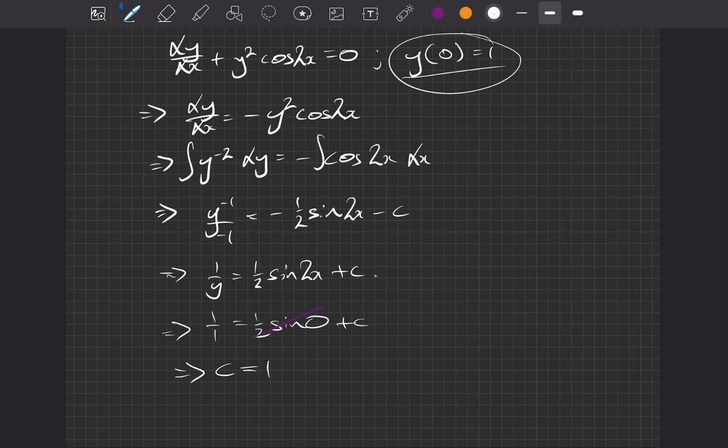So we can use this then and carry on down this right hand side, and we'll try and make it into a y equals, just to leave our answer in a nicer form. So if we plug in our c value, we have 1 over y is equal to 1 over 2 sine of 2x plus 1 now, not our c but plus 1.